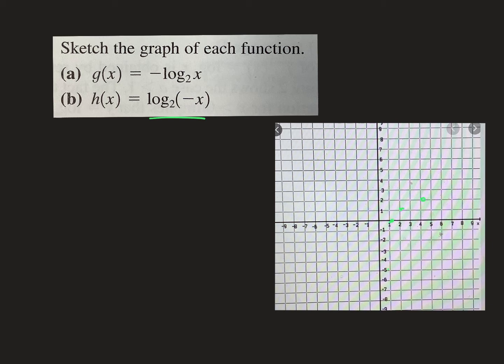That's what we just did on the last page. This one has a negative in the front. Negative in the front reflects across the x, so it's going to do this instead. Instead of going like that one did, the points are going to come down here. It's going to go just like that, reflected across the x.